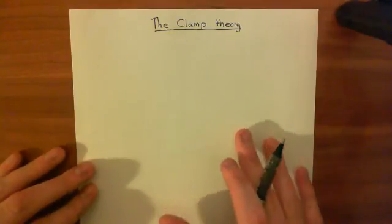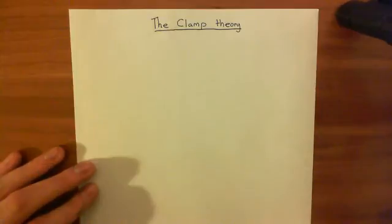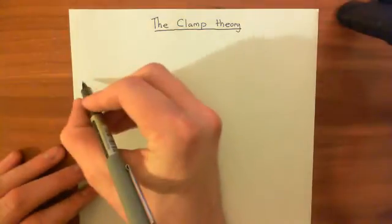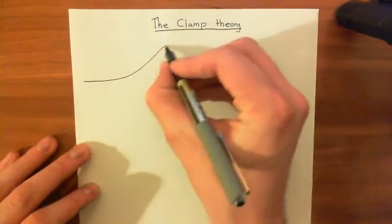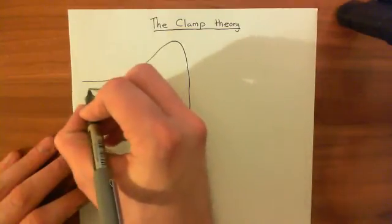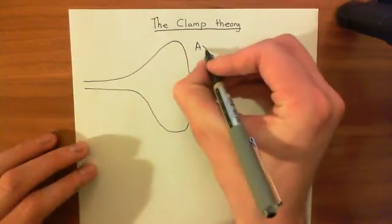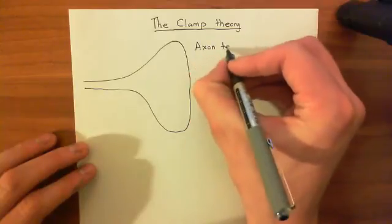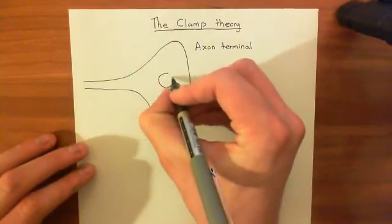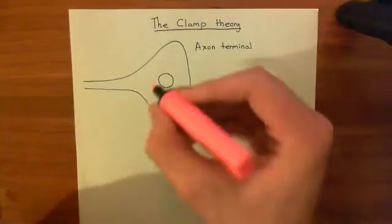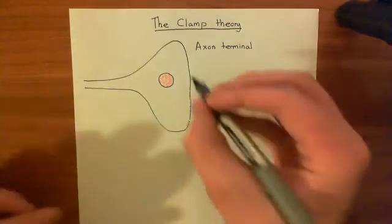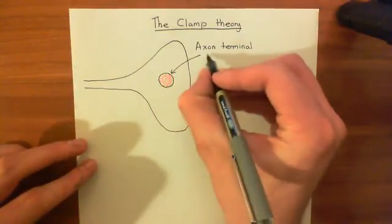Let's firstly discuss how we dock synaptic vesicles at the plasma membrane, and then we'll discuss why we need the clamp theory in more detail. Let's say we have an axon terminal here. In the axon terminal, what we are producing is synaptic vesicles — a normal vesicle which is full of neurotransmitter. So there are lots of neurotransmitter molecules within this vesicle.